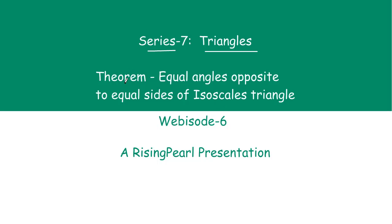Today we are going to talk about the theorem: equal angles opposite to equal sides of an isosceles triangle are equal. So we are going to find out why this theorem is true and how we can prove it. So let us quickly get started.